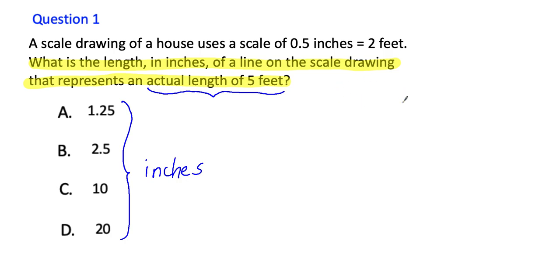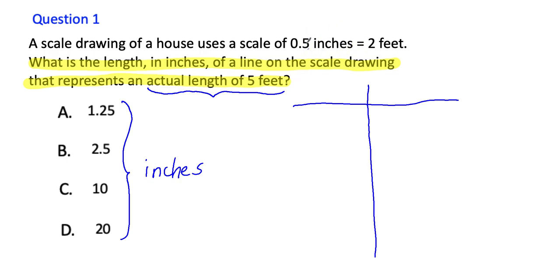You can set up a proportion to do this, but I don't do it that way — there's more than one way. I'm just going to make a table of values. On my table I'll put inches on one side and feet on the other. I'll write 0.5 inches and 2 feet from the scale. So really what this means is for every 0.5 inches on my scale drawing, it's actually 2 feet.